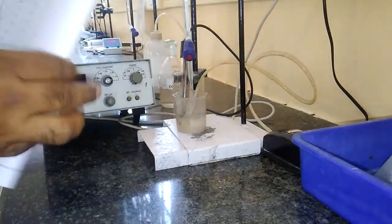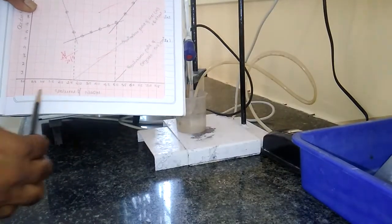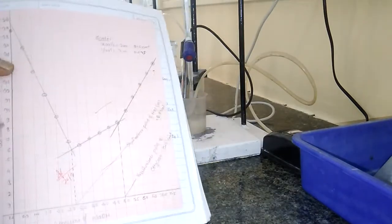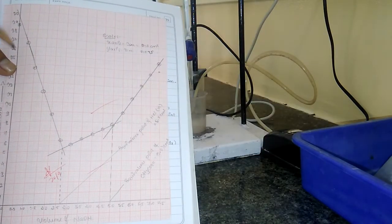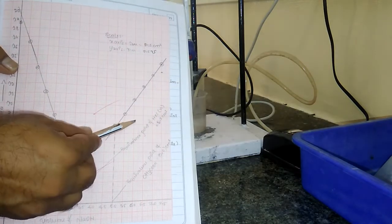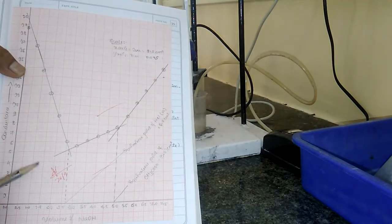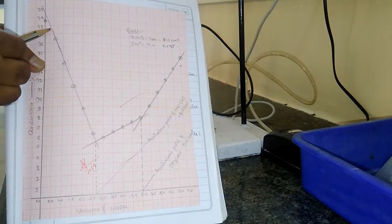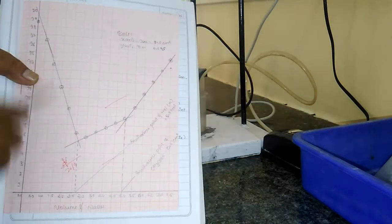First, we have to plot the graph. The graph is plotted taking the volume of NaOH on the x-axis and conductance values — specific conductance — on the y-axis. Here we are going to get three straight lines. The first straight line decreases, the second one slightly increases, and the third one suddenly rises. This decrease is due to the replacement of H⁺ ions by Na⁺ ions. Na⁺ ions have less mobility, that is why it decreases.